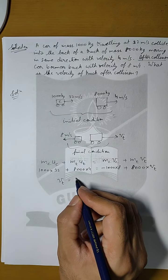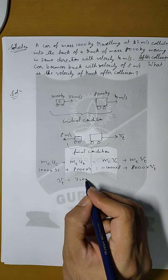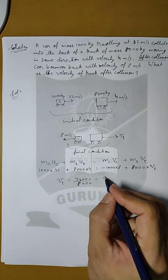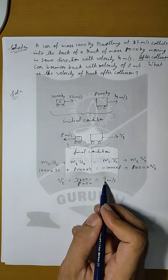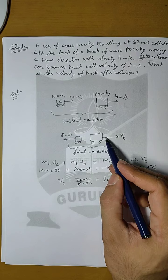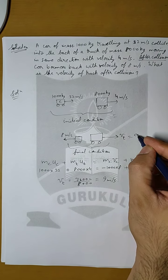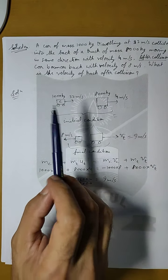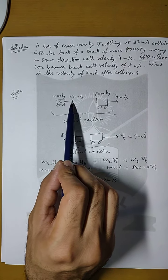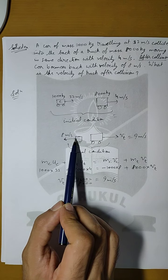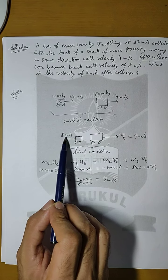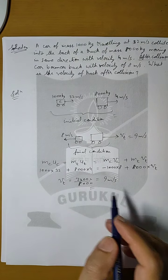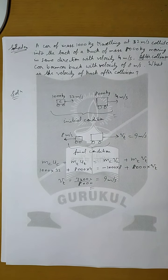When we solve for Vt, it comes out to be 72,000 divided by 8,000, which equals 9 meters per second. This value is positive, meaning the truck is still moving in the same direction, but its velocity has increased from 4 meters per second to 9 meters per second. The car's velocity changed from plus 32 meters per second to minus 8 meters per second. This is how we apply the law of conservation of momentum to find various velocities.